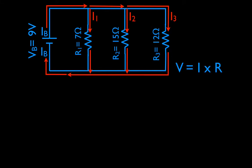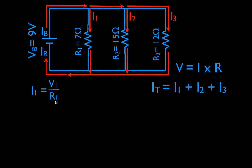Now let's actually calculate the current through each branch using Ohm's Law: V equals I times R. The total current IT — same as IB — equals the sum of the currents through each branch. Solving for current: I equals V divided by R. For branch one we use I1 equals V1 divided by R1. Remember from a previous video: for parallel resistors the voltage across each branch equals the battery voltage, so in each case the voltage is nine volts.